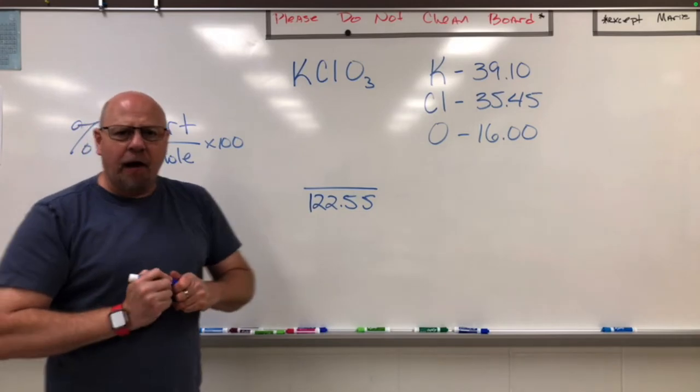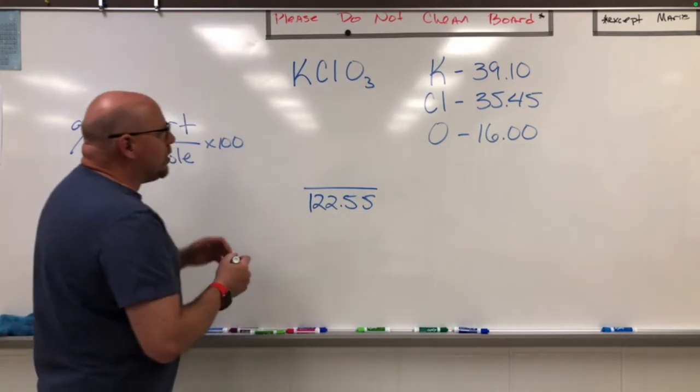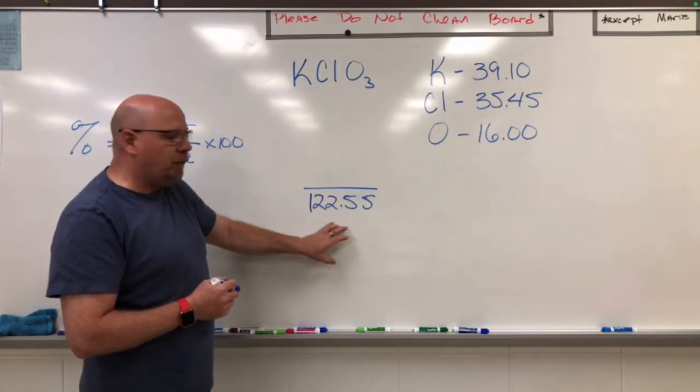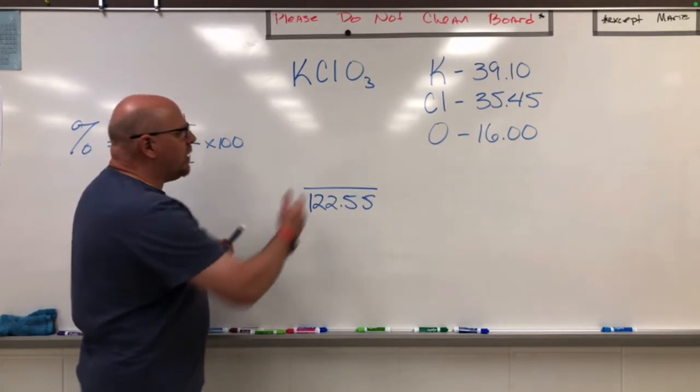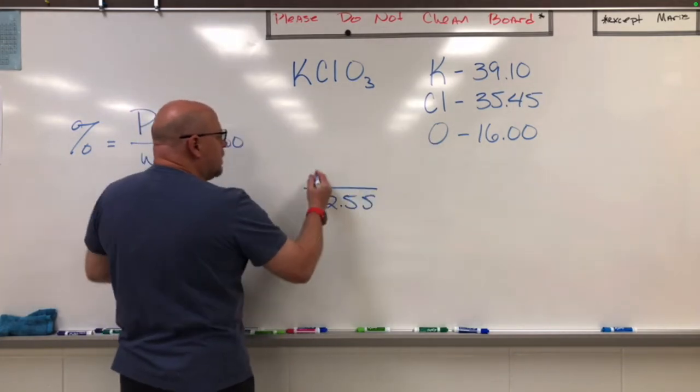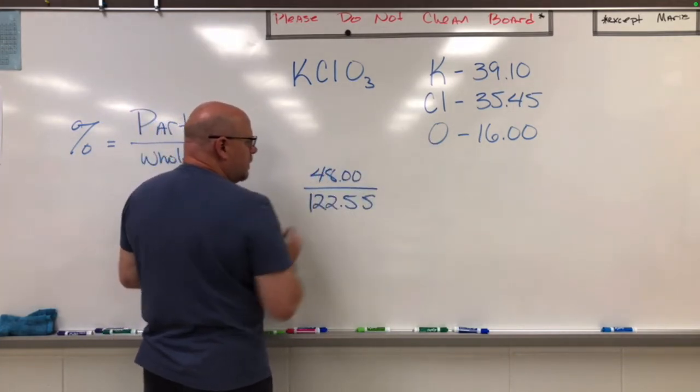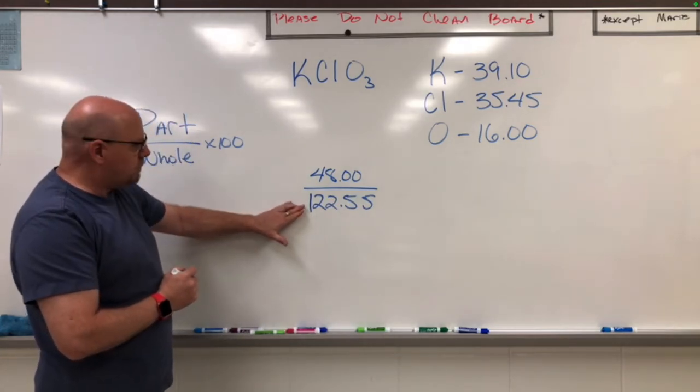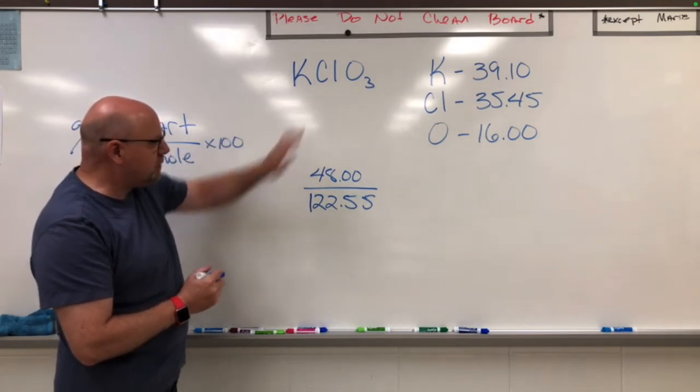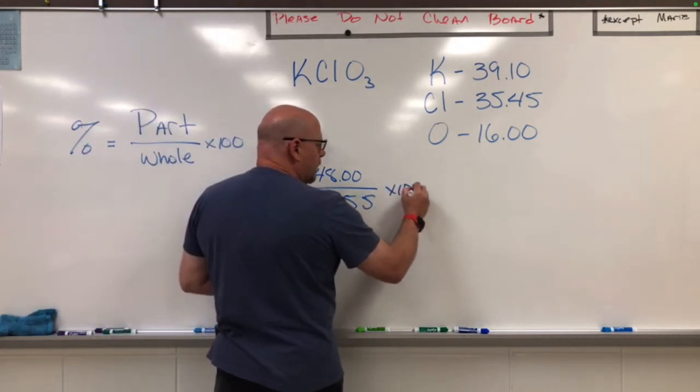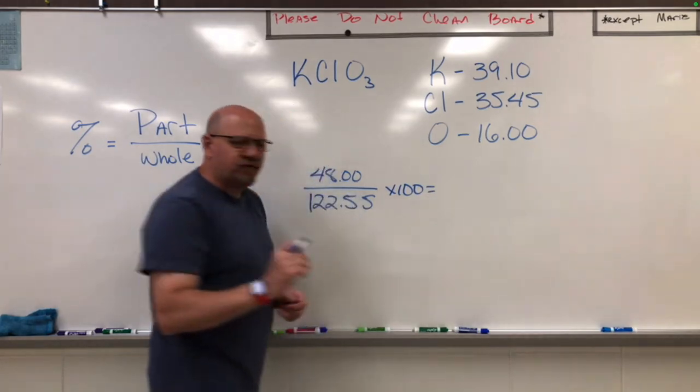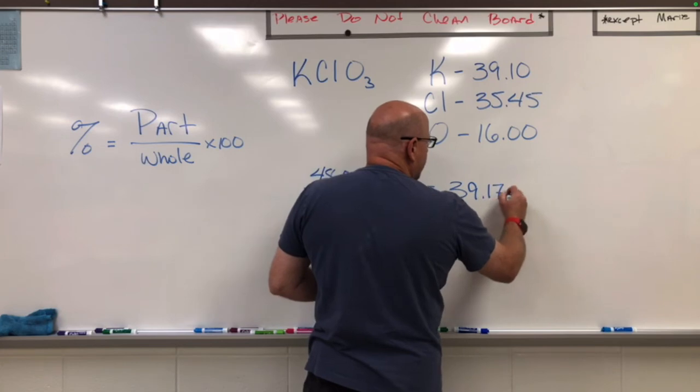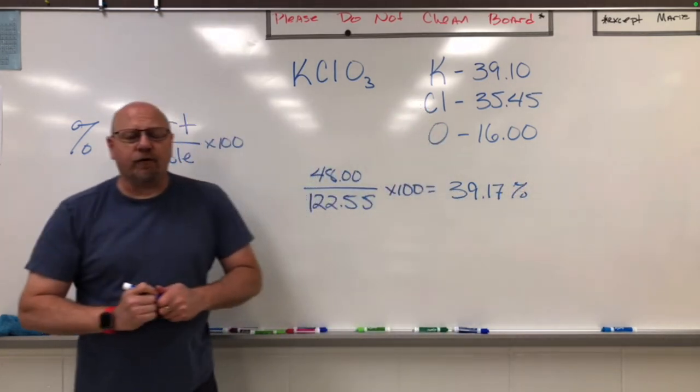That's going to be in our denominator, and in our numerator is going to go the mass of what oxygen contributes to that 122.55. In this case, 16 times 3 is 48. So we have our part, the oxygen, divided by the whole, the whole compound, multiply that by 100, and we get a percent by mass of 39.17%.